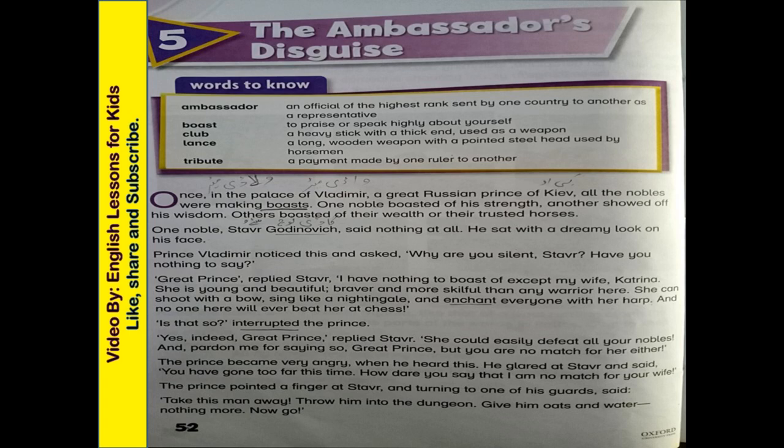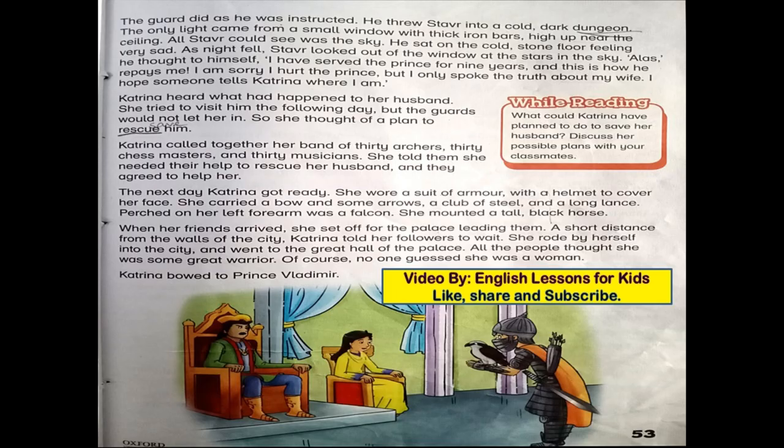The prince became very angry when he heard this. He glared at Steve and said, 'You have gone too far this time! How dare you say that I am no match for your wife!' The prince pointed a finger at Steve and turned to one of his guards: 'Take this man away, throw him into the dungeon, give him oats and water, nothing more. Now go!' The guard did as he was instructed and threw Steve into a cold dark dungeon.